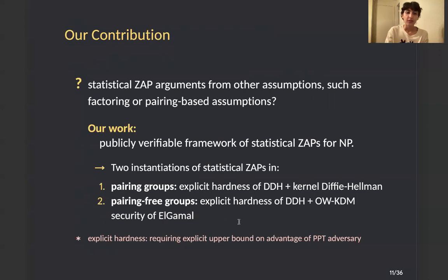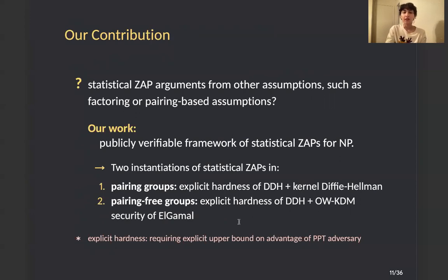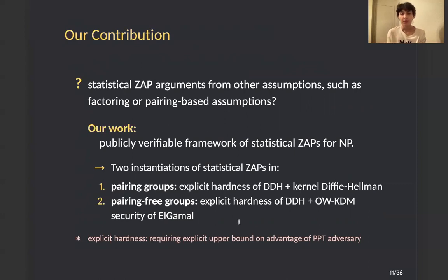In our work, we introduce a publicly verifiable framework for constructing statistical ZAPs for NP, with two instantiations. One is in pairing groups based on explicit hardness of DDH and the Kernel-Diffie-Hellman assumption. The other is in pairing-free groups based on explicit hardness of DDH plus OWKDM security of LWE encryption. By explicit hardness, we mean we require some explicit upper bound on the advantage of a PPT adversary against the assumption.